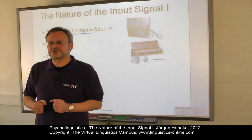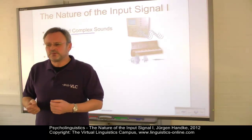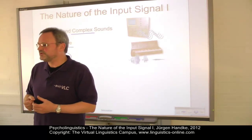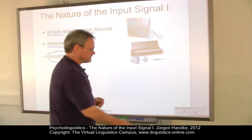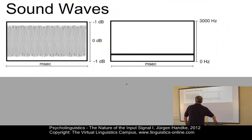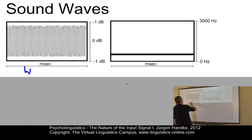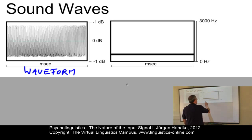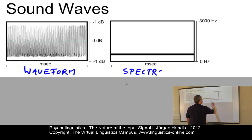In order to represent such a sound visually, we have two types of representation: on the one hand, we have the so-called waveform view, and the second representation is the spectrogram or the spectrographic view.